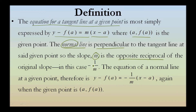So the slope m is the opposite reciprocal of the original, in this case negative 1 over m. The equation of a normal line at a given point, therefore, is y minus f of a equals negative 1 over m times the quantity x minus a, when the given point is a comma f of a.